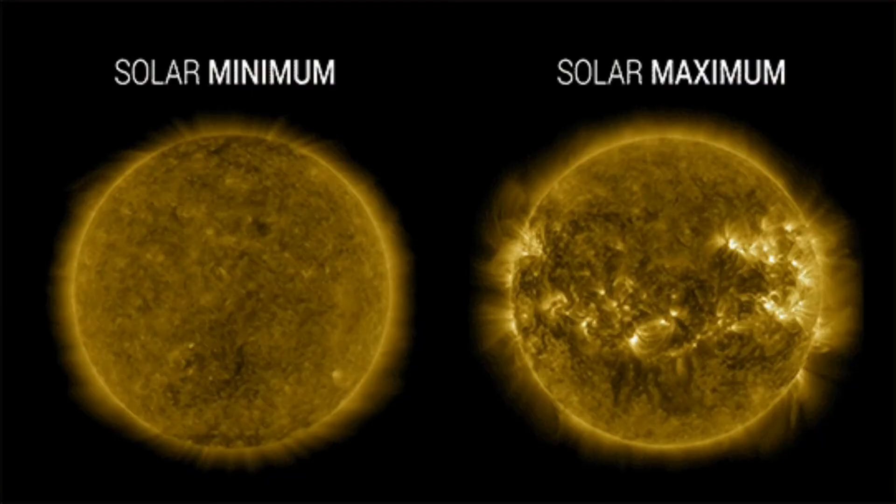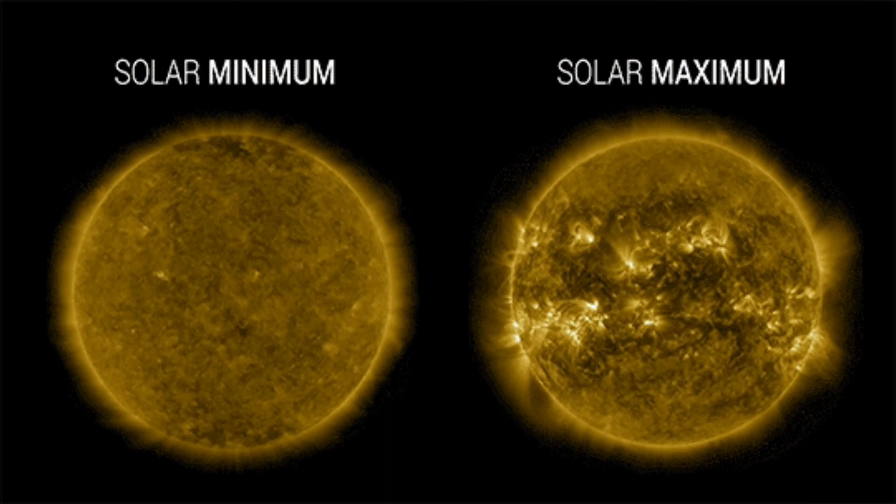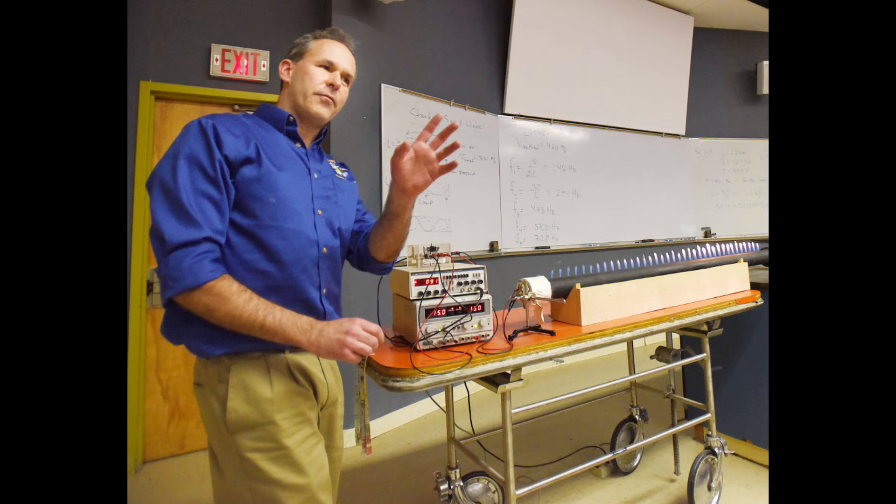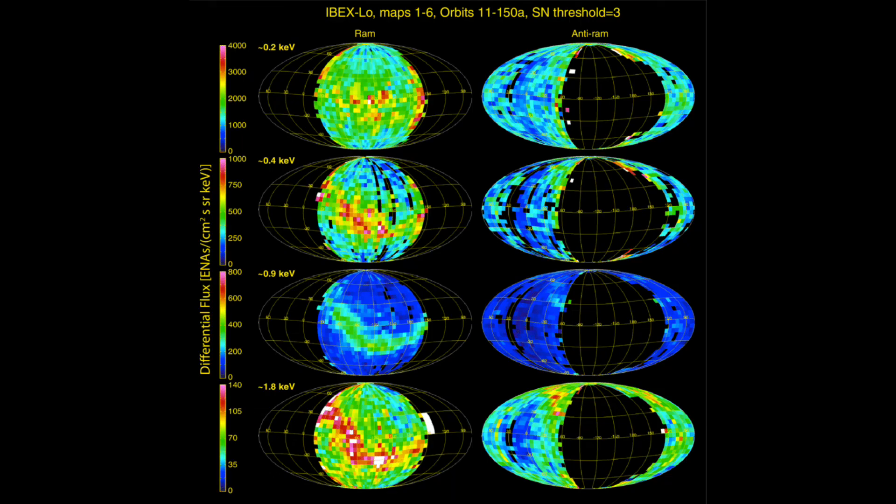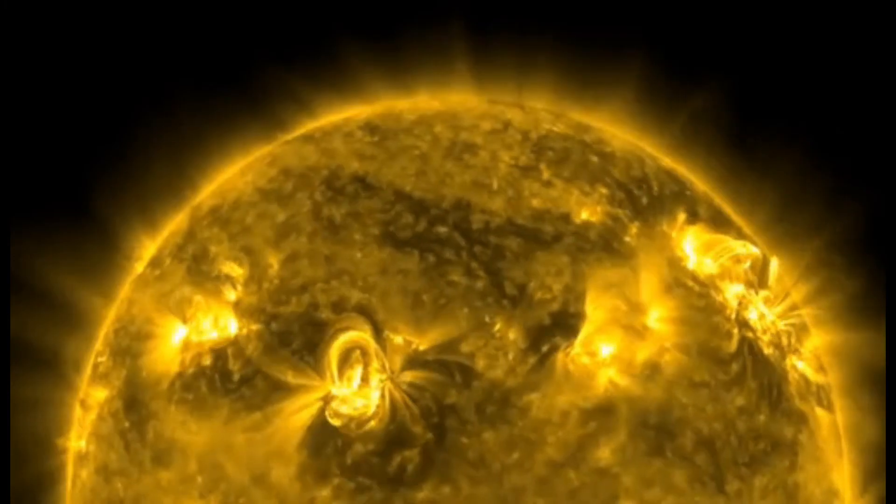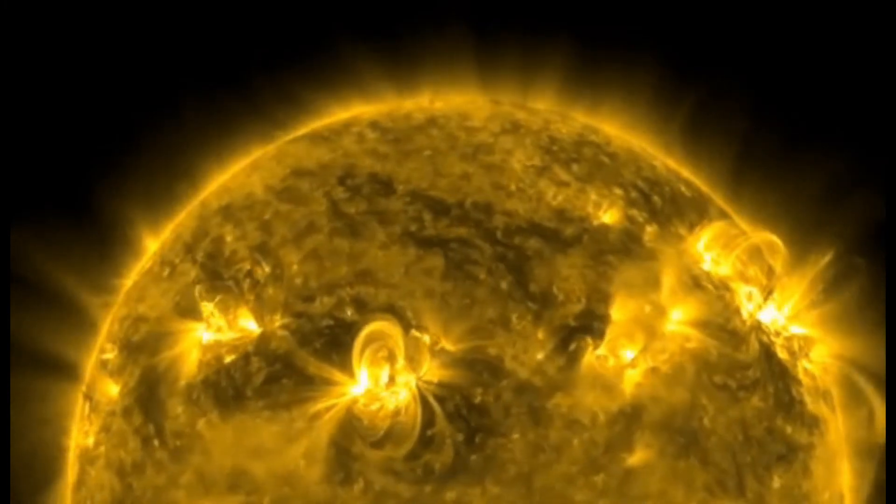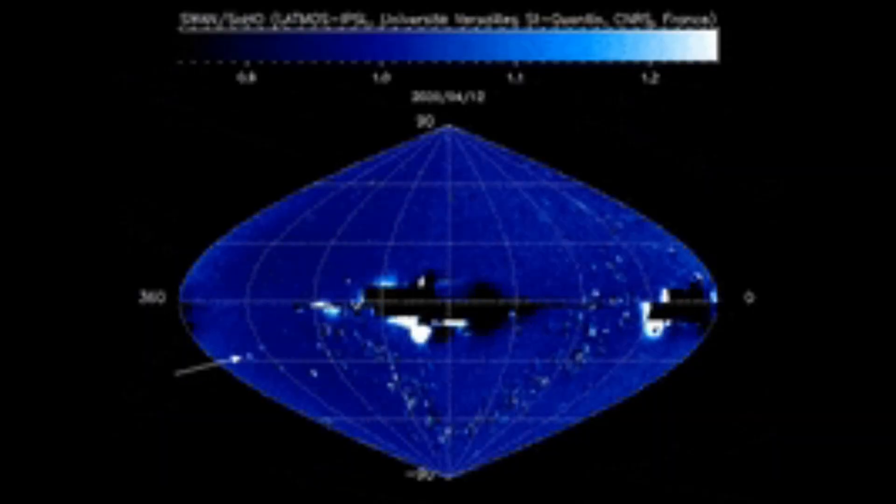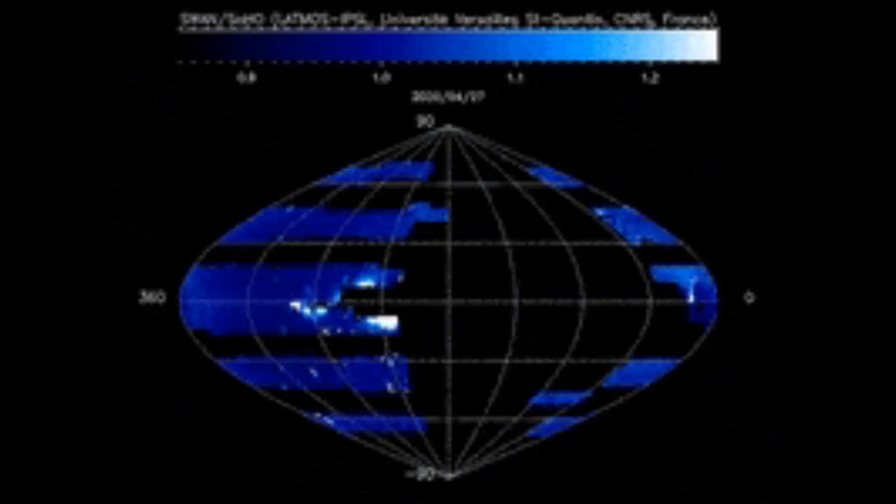The solar wind signal sent out by the sun varies in strength forming a unique pattern, explained Reisenfeld. IBEX will see that same pattern in the returning ENA signal 2 to 6 years later, depending on ENA energy and the direction IBEX is looking through the heliosphere. This time difference is how we found the distance to the ENA source region in a particular direction.